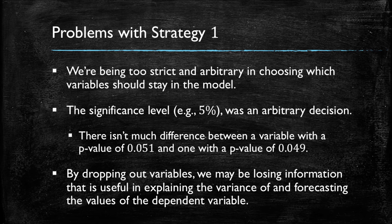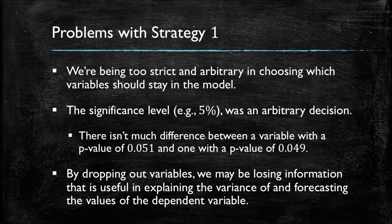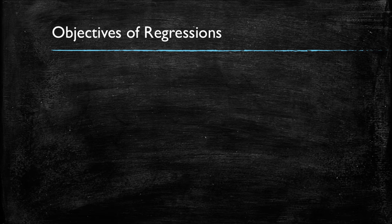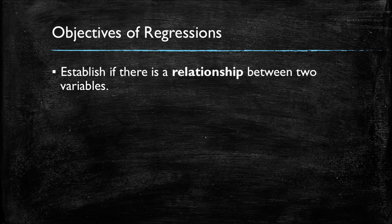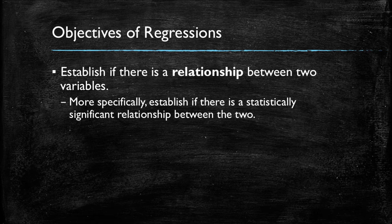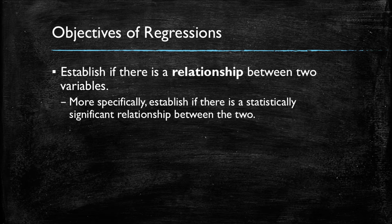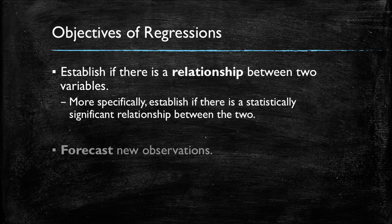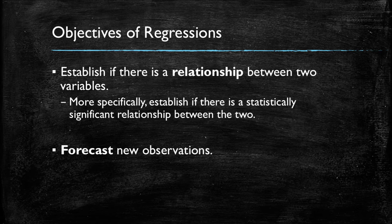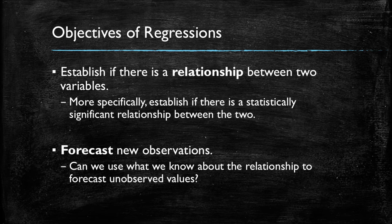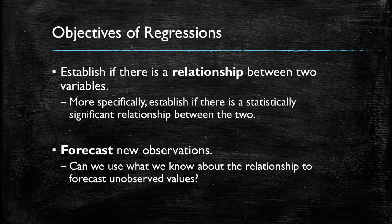Moreover, by dropping out the variables, we might be losing information that could be useful in explaining the variance of the dependent variable, and that we could use eventually to forecast unobserved values of the dependent variable. Let's remember that regressions had two objectives. One was to establish if there is a relationship between two variables, and in particular if these relationships are statistically significant, which coincides with our approach in the first strategy where we only leave in variables that have such statistically significant relationships. However, our second objective was to forecast new observations, and to use what we know about the variance in the x's and its relationship to the variance of the y's to forecast new observations. So could we develop a new strategy that actually focused on a model's ability to accurately forecast unobserved values of the y's?